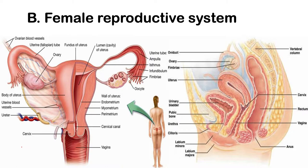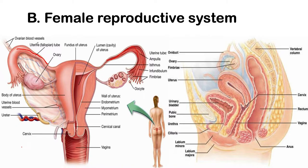It is through the sweeping and ciliated actions of the fimbria that the mature oocyte released from your ovary is collected. As your fimbria sweeps the oocyte, the mature oocyte is transported into your uterine or fallopian tube, where it stays and waits for a sperm cell.